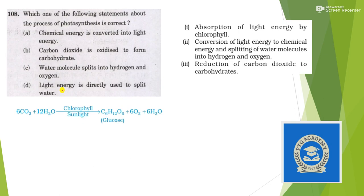Next: which one of the following statements about the process of photosynthesis is correct? Option one: chemical energy is converted into light energy — no, light energy should be converted into chemical energy. Option two: carbon dioxide is oxidized to form carbohydrates — no, it is reduction of carbon dioxide to carbohydrates, not oxidation. Option three: water molecules split into hydrogen and oxygen — you can see conversion of light energy to chemical energy and splitting of water molecules into hydrogen and oxygen — this is true. Option four: light energy is directly used to split water — no, first conversion of light energy to chemical energy happens, then splitting occurs. So the answer is option D. Going through NCERT is very important.